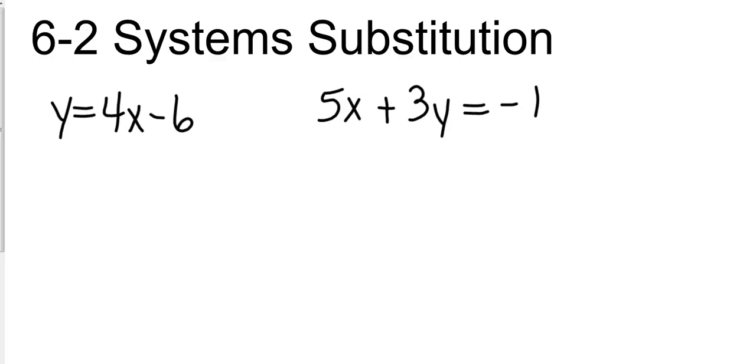We've got y equals 4x minus 6 and we've got 5x plus 3y equals negative 1. We know there's two things we're going to have to solve for: we have to solve for a y, we have to solve for an x. If you look at this equation, it tells us that y equals 4x minus 6.